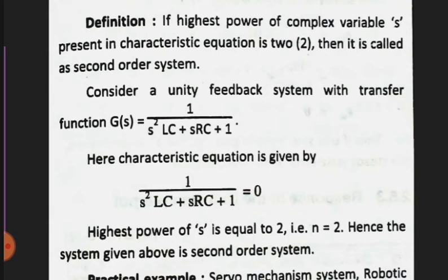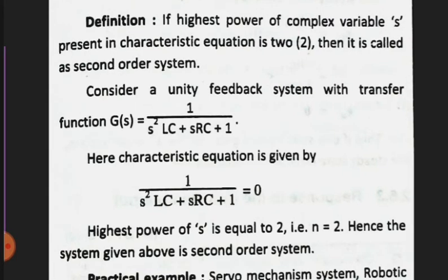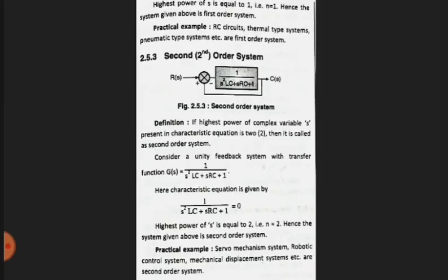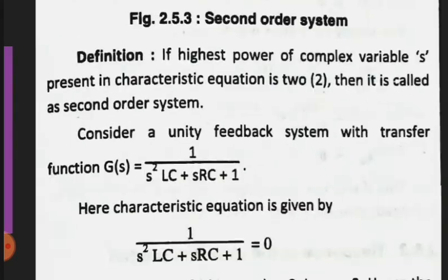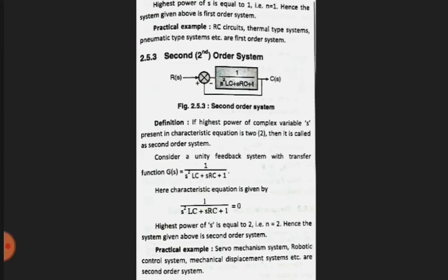The characteristic equation is s²Ls + sCR + 1 = 0, and the highest power of s is equal to 2. So the system given above is a second order system. Practical examples include servo mechanism systems, robotic control systems, and mechanical displacement systems. This concludes our topic on the order of the system. Thank you very much.